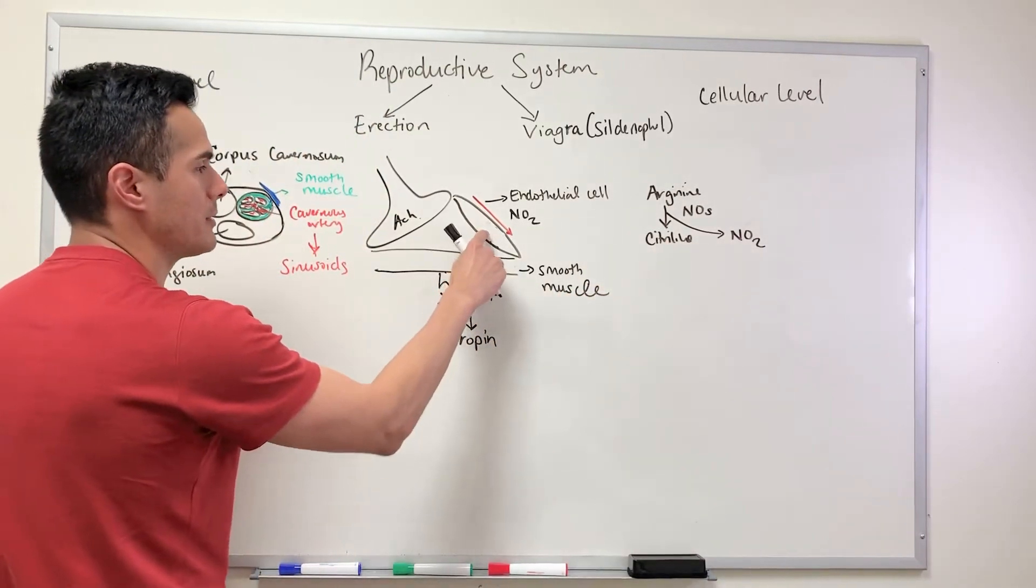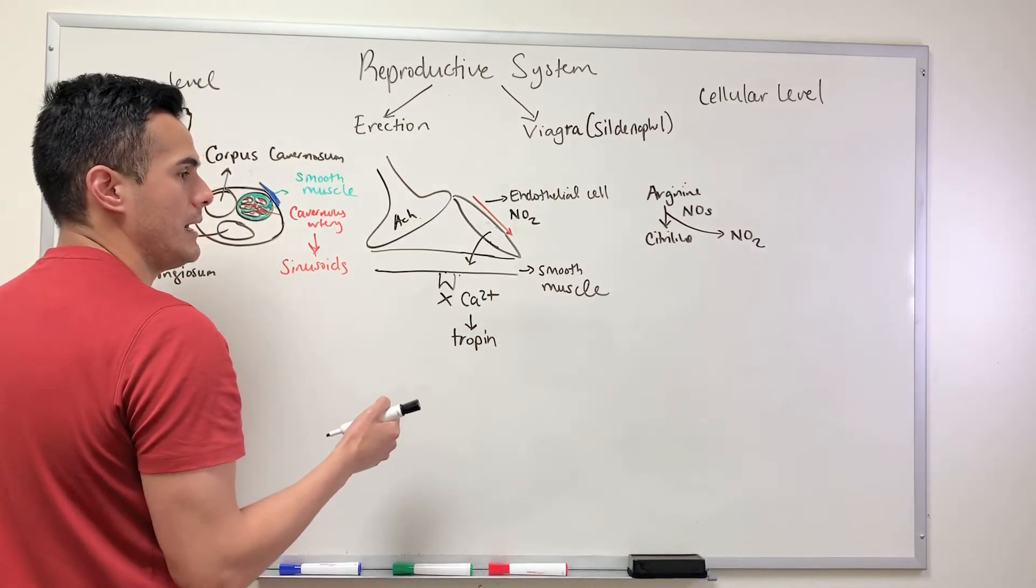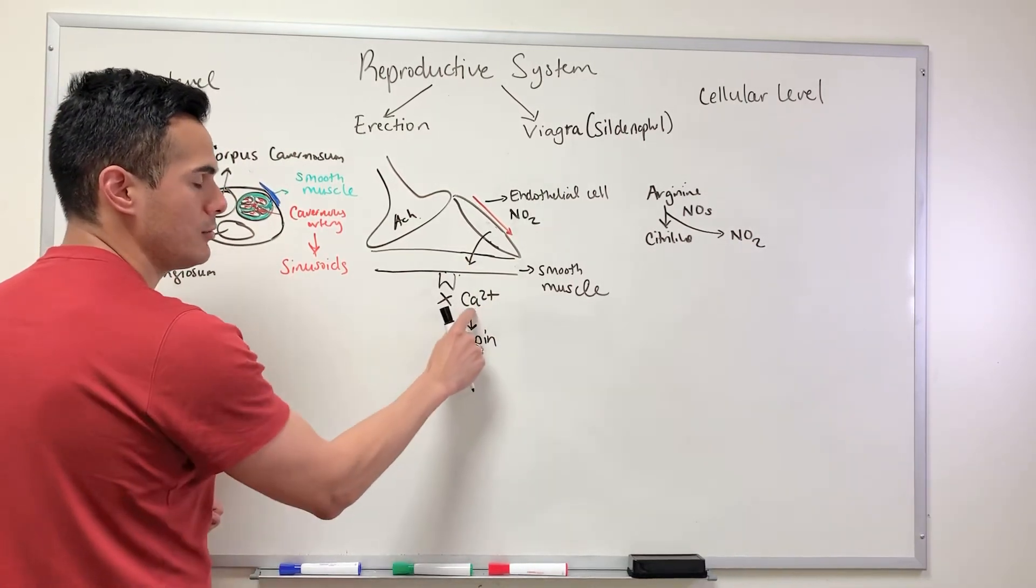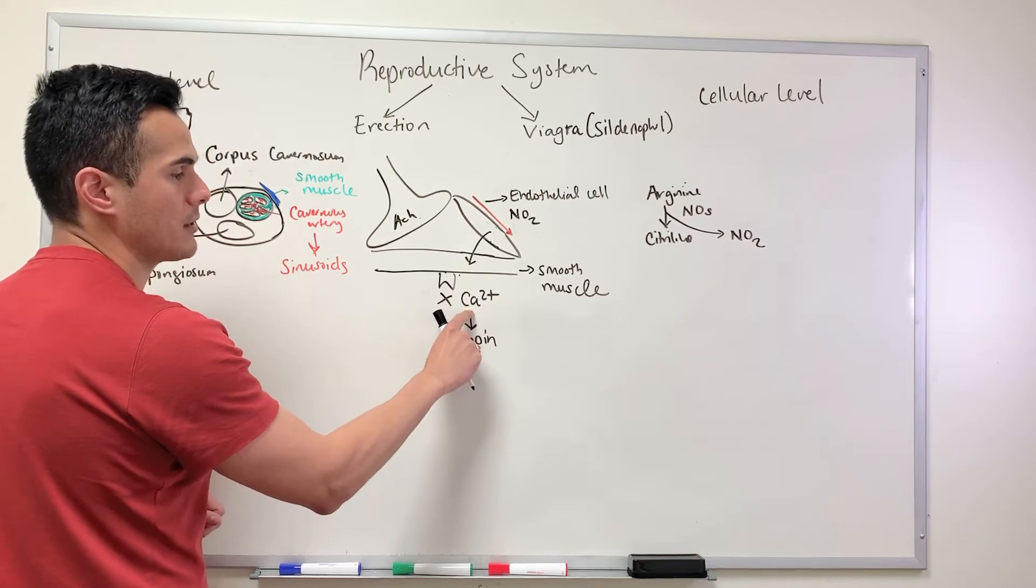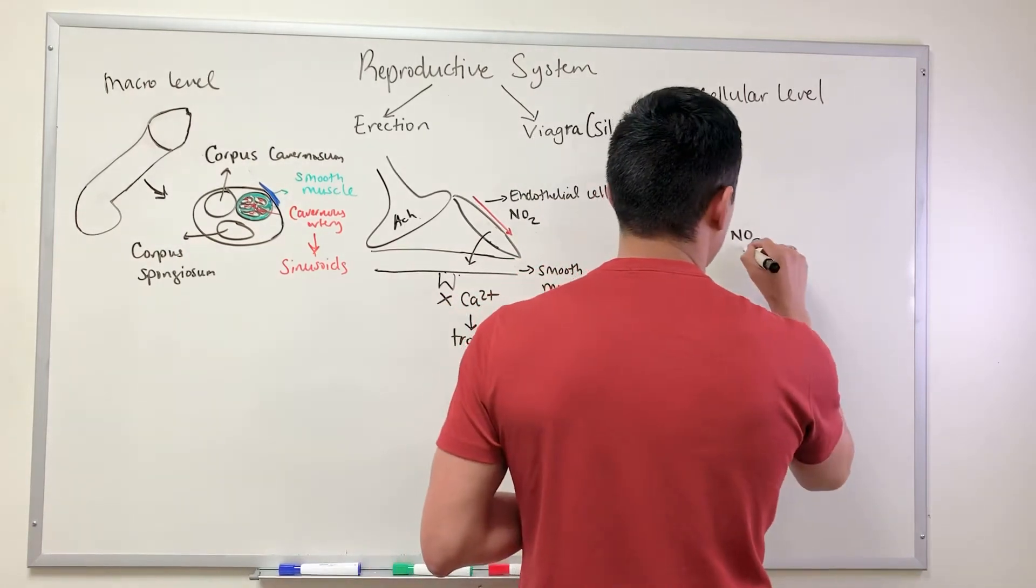When NO is produced here in this endothelial cell, it's going to diffuse here into this smooth muscle. In order to inhibit the release of calcium, we have to go through our secondary messenger system.